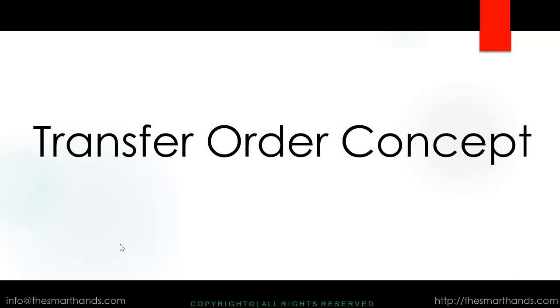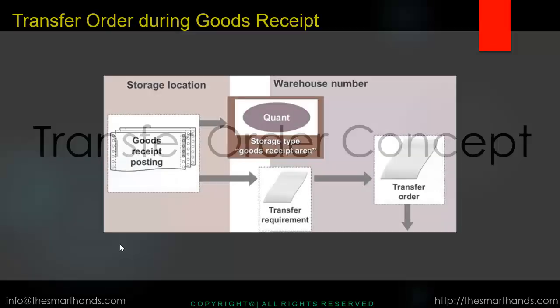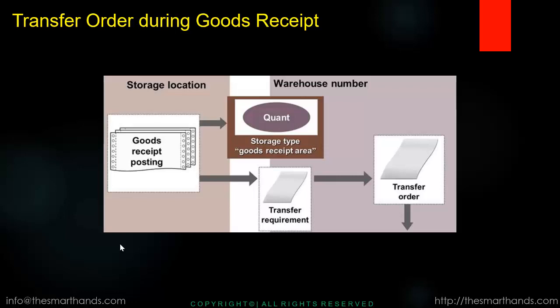Before we move ahead, I want you to know about the transfer order concept in warehouse management. Basically, all goods receipts and goods issues happening in WM always revolve around the transfer order concept. During goods receipt, a transfer requirement is generated, which then generates a transfer order. As you can see in this workflow screen, as soon as you complete your MIGO transaction, the system creates a transfer requirement, which further generates a transfer order. Confirming the transfer order finishes the goods receipt process.